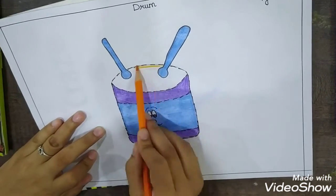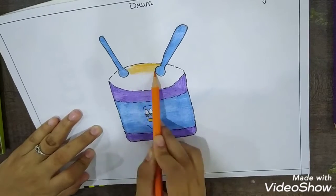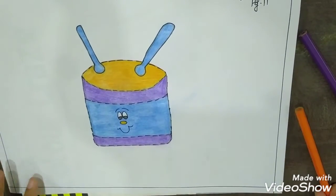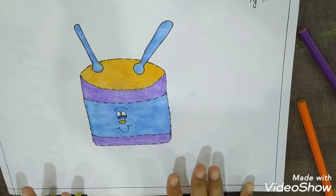Now we will take orange and color this part. Okay. So let's color. See. Now we have completed with drawing and coloring.